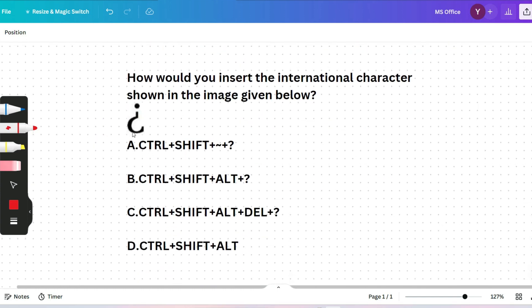The next question is: how would you insert the international character shown in the image given below? This is like a reverse question mark. This seems like a very simple question, but this is the question in which candidates make mostly faults. Please give the answer in the comment section before I give it. The correct answer will be Control Shift Alt and question mark. I hope you will try in Word or Excel and you will get the same.